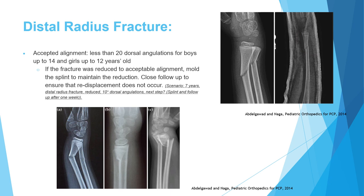The treatment in most cases is closed reduction, targeting less than 20 degrees dorsal angulation for boys 14 and under and girls 12 and under. Once you obtain this, you apply a well-molded cast and do close follow-up.